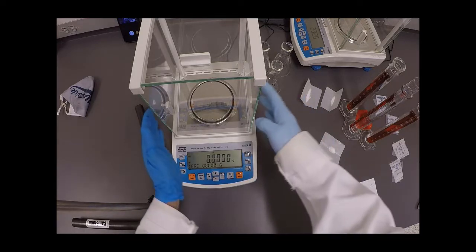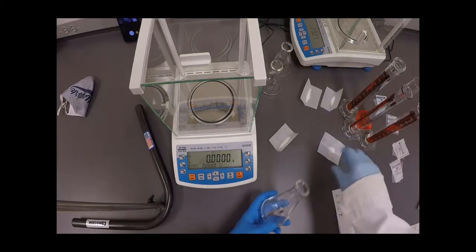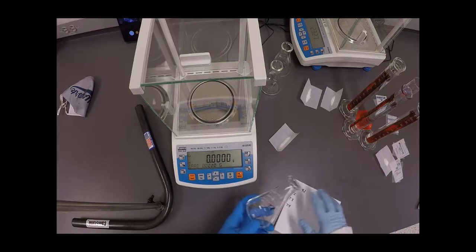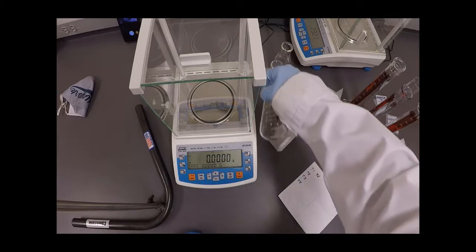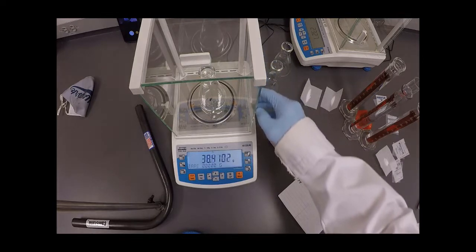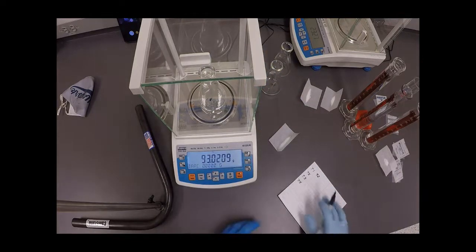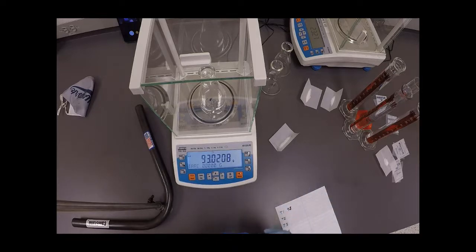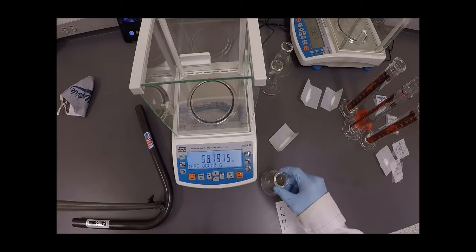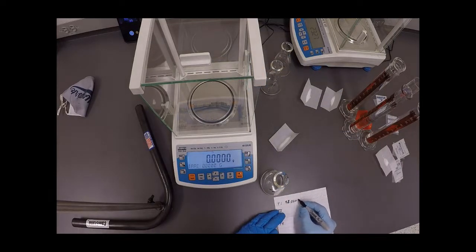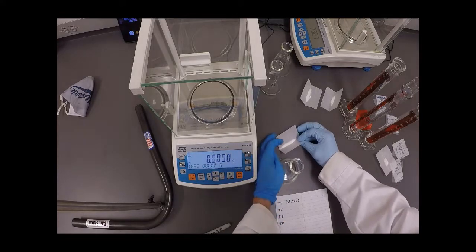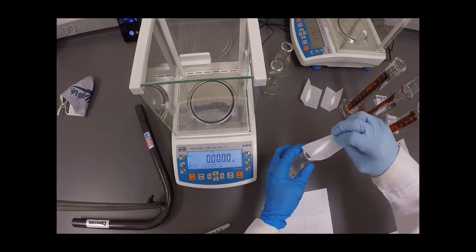Now I'm going to go ahead and begin by, I've got three trials available here, three Erlenmeyers, which I've labeled already, and I've got a little note sheet here. So I'm going to open up my balance door and carefully take the mass of the first Erlenmeyer, 93.0208. So 93.0208 grams.